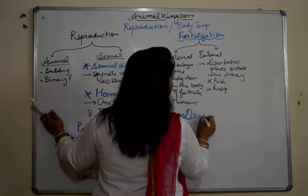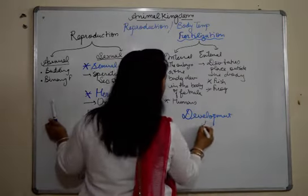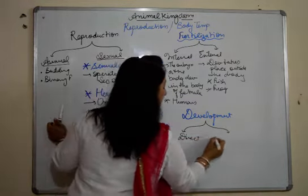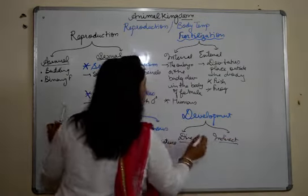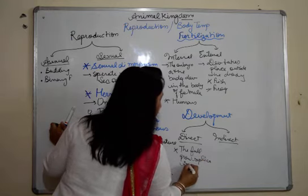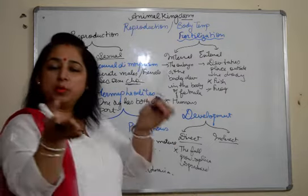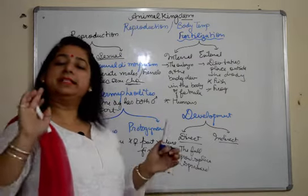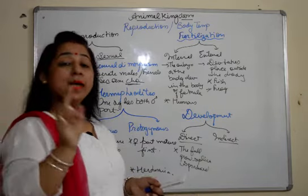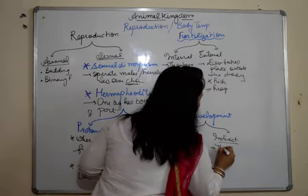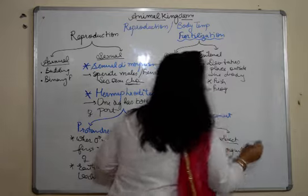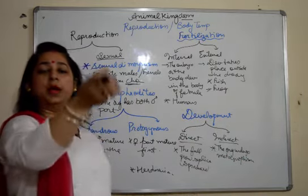After fertilization, we look at development. On the basis of development, organisms are also categorized into two types: those which show direct development and those which show indirect development. Direct development is wherein a full-grown replica is produced — for example, in humans a baby is born with ears, nose, and eyes, same parts, just smaller. Similarly in birds, the egg hatches to produce a similar young one. In case of indirect development, the organisms undergo metamorphism — the egg hatches into a larva, then pupa, then a tadpole, and finally the frog.